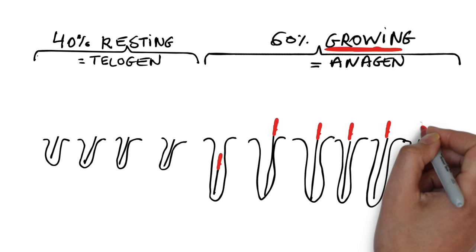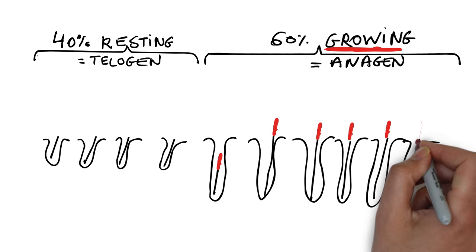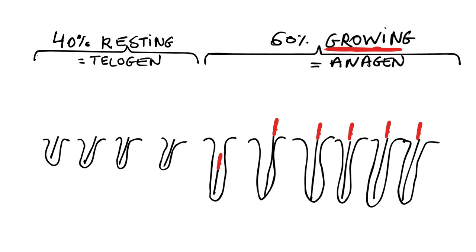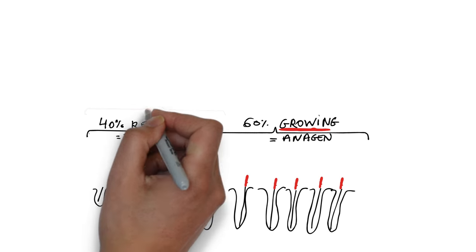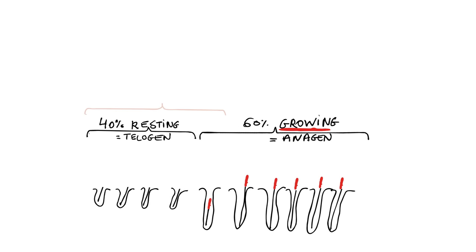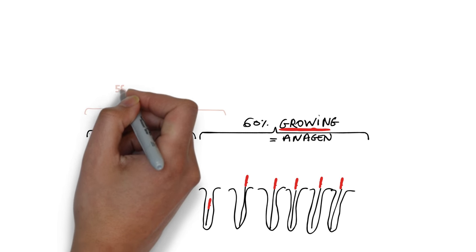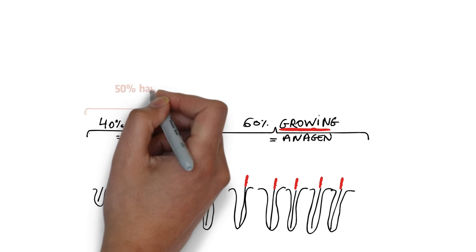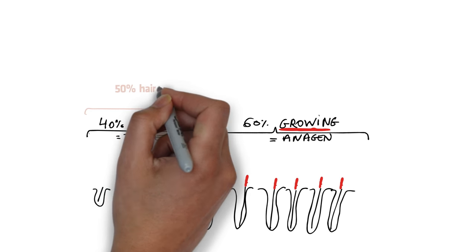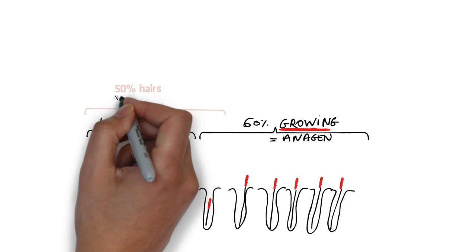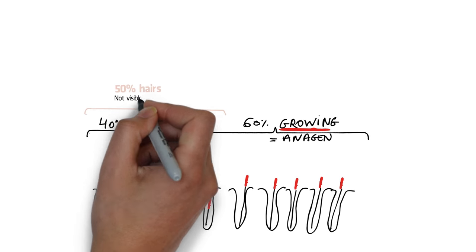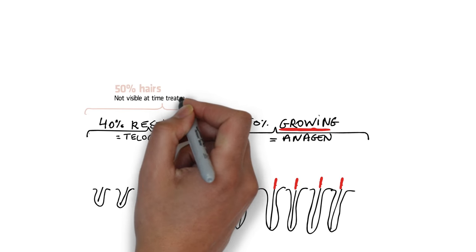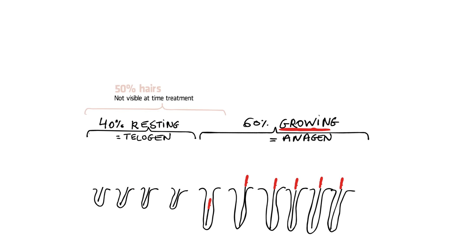Notice that the first hair, early in the growing phase, still has not reached the surface of the skin. This means 5 out of 10 hairs are not visible at the time of the first clearing electrolysis session, so they are not treated, as the electrologist can only treat the hair that is visible.